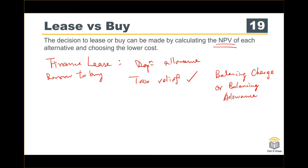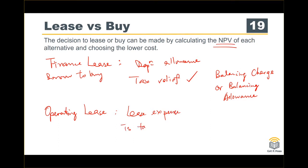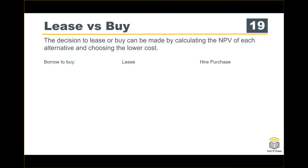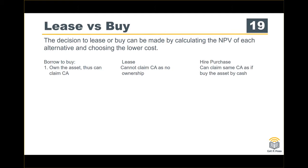Under borrow to buy, you own the asset and can claim capital allowance. For lease, you cannot claim any allowance as there is no ownership. For hire purchase, yes — you can claim the same allowance as if you bought the asset by cash.